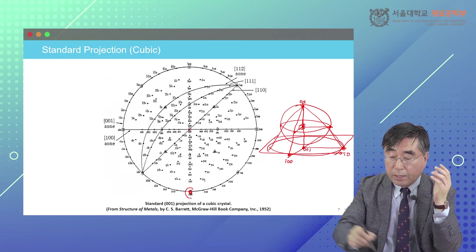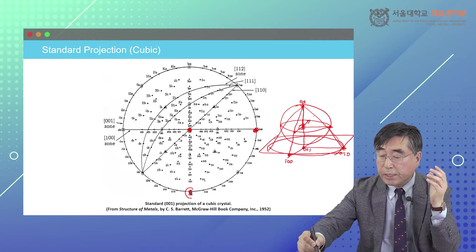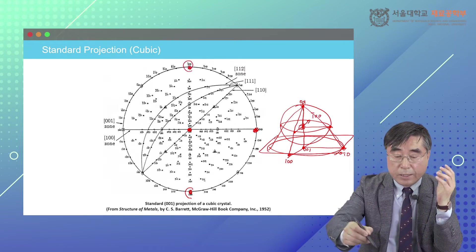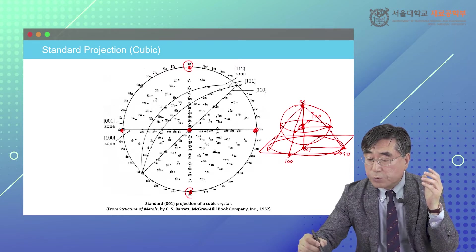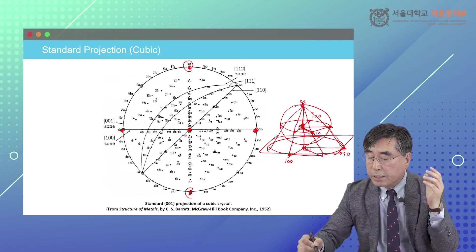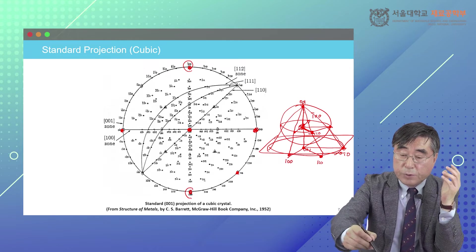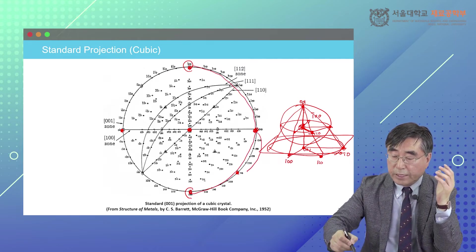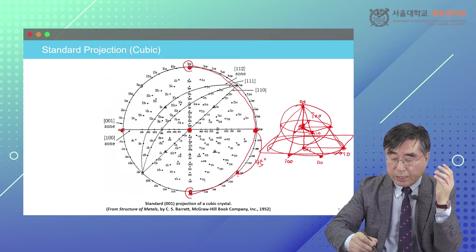So there is a 100 pole, a 010 pole, and a 001 pole. If I draw the other side of the plane, which is 1-bar-00, that is in here. The 0-1-bar-0 pole is also shown. If you draw the 110 plane, the 110 pole is the projection of the normal to that plane. This 110 pole is projected at this point. If I measure the angle between the 010 pole and 110 pole, it is 45 degrees, and the angle between the 100 pole and 110 pole is also 45 degrees.